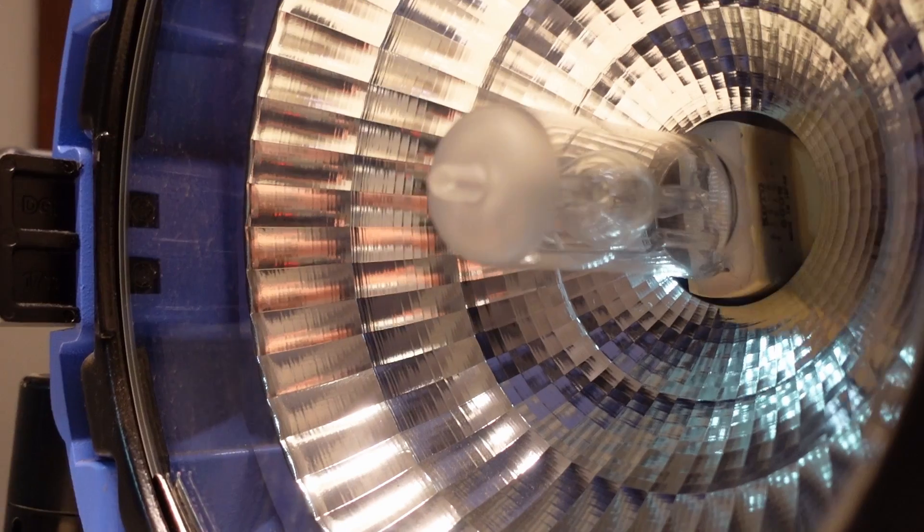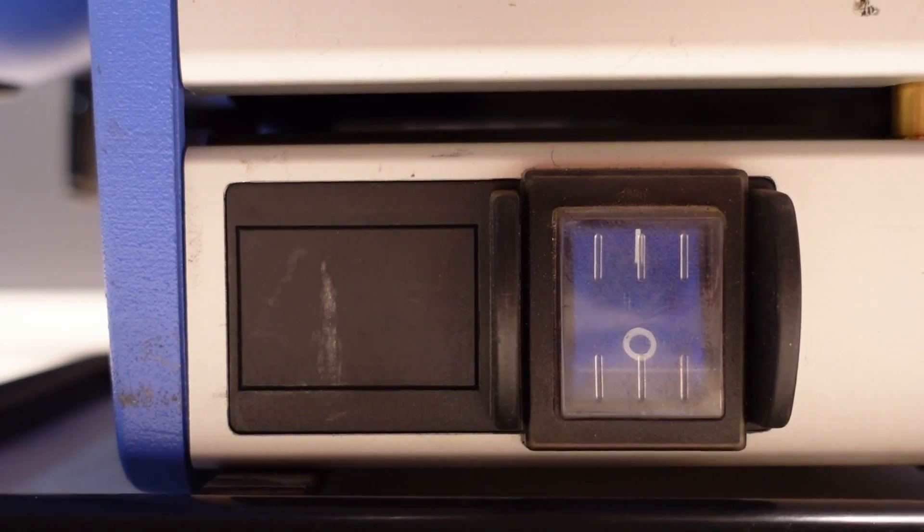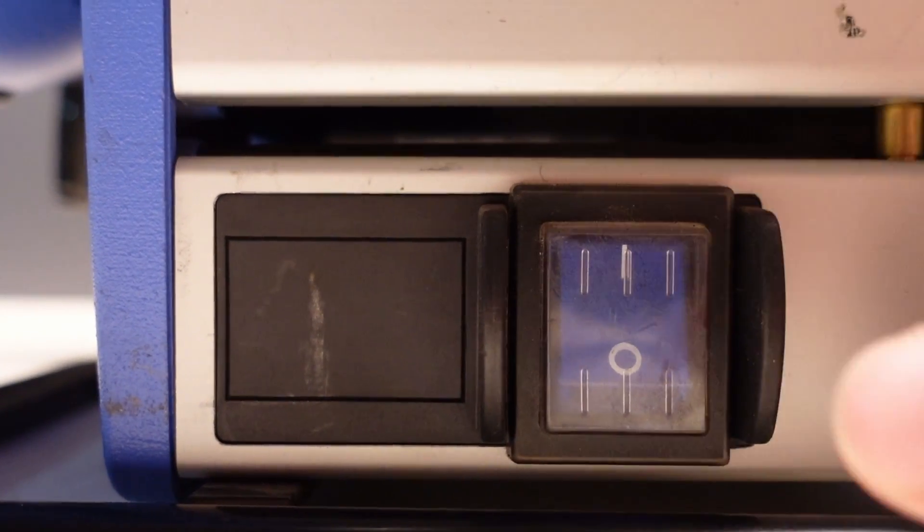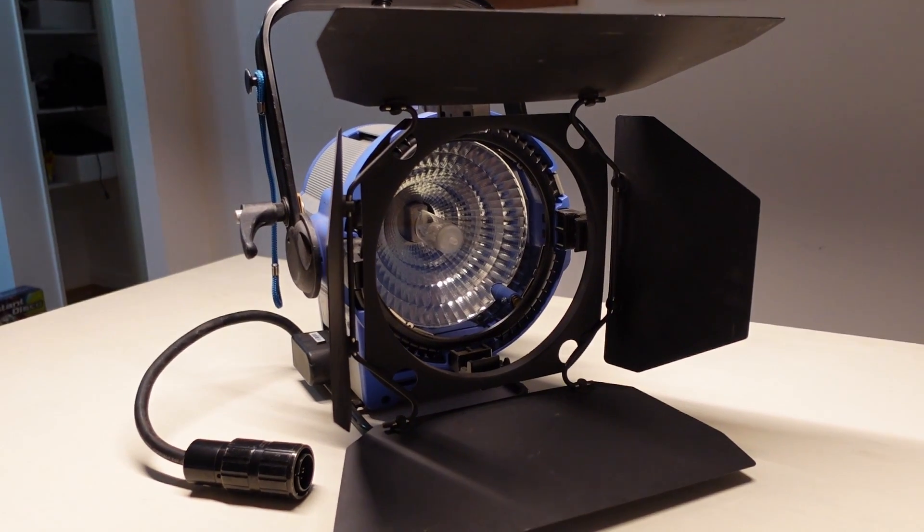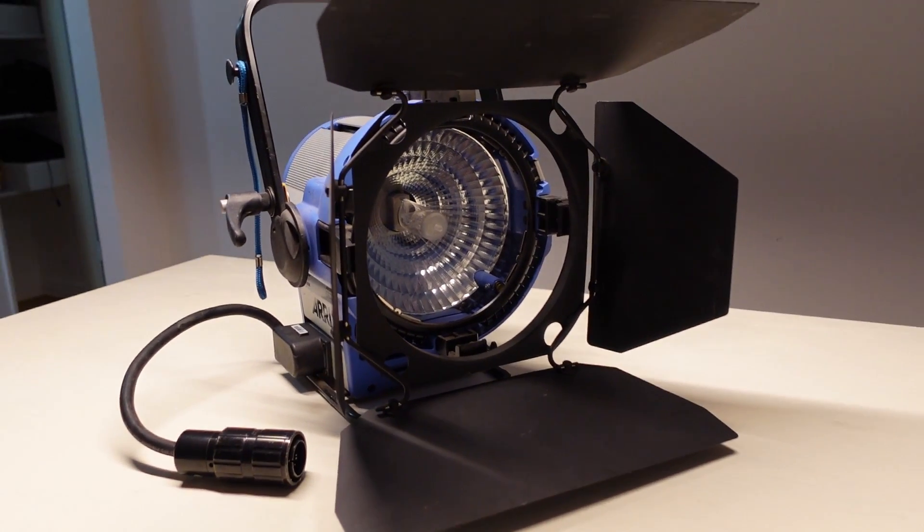There is a power switch on the side of the light just in case you want to turn on and off the light using the head. And lastly, there's the barn door which controls the spill and the shape of the light.